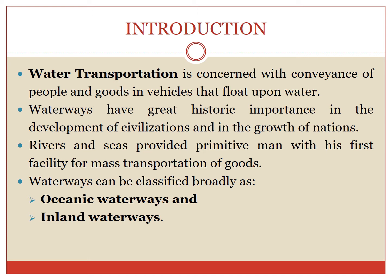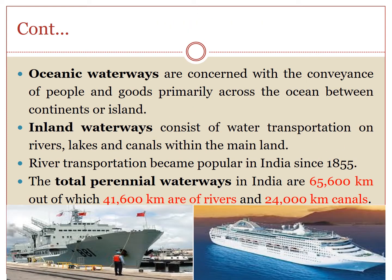Waterways can be classified broadly into two types: oceanic waterways and inland waterways. Oceanic waterways are concerned with the conveyance of people and goods primarily across the oceans between continents or islands. Inland waterways consist of water transportation on rivers, lakes, and canals within the mainland of any country. In India, river transportation became popular in 1855. India has about 65,600 kilometers of total perennial waterways, out of which 41,600 kilometers are rivers and 24,000 kilometers are canals.